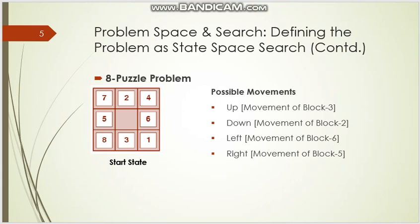The first movement is up — if we take the up movement, then the tile '3' will go into the empty block and that block will become empty. The next movement is down, which is possible on the block of '2'. Next is left, which is applicable on the block of '6', and the last movement is right, which is possible on the block of '5'.